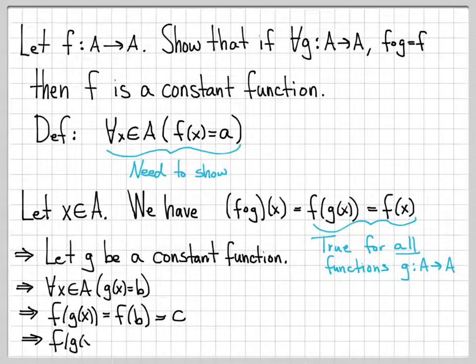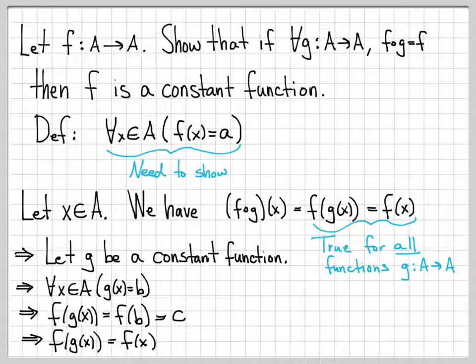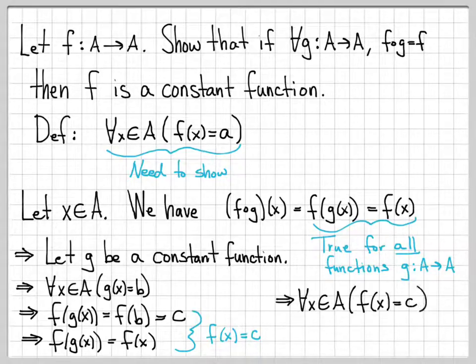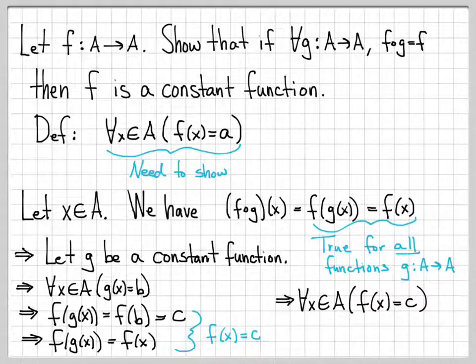Now we have two ways to write f of g of x. From our specific choice of g as a constant function, f of g of x equals the constant c. And from our assumption, f of g of x also equals f of x. Combining these two, we get f of x equals c. Since we let x be an arbitrary element of A, we've shown that for all x in A, f of x equals c, which is exactly the definition of a constant function. Therefore, f is a constant function.